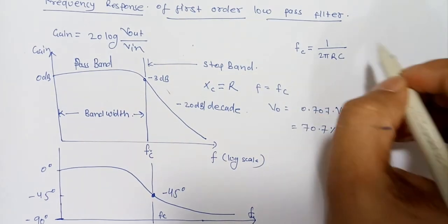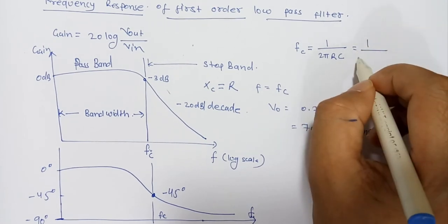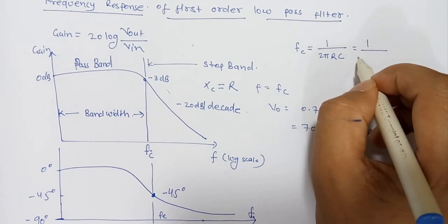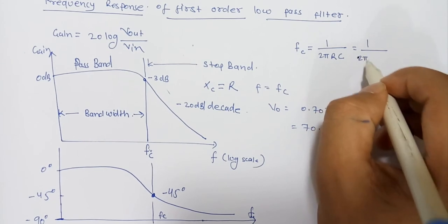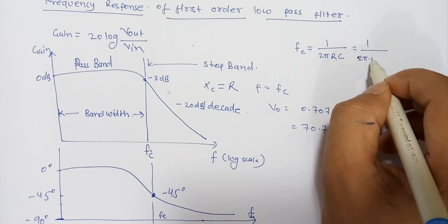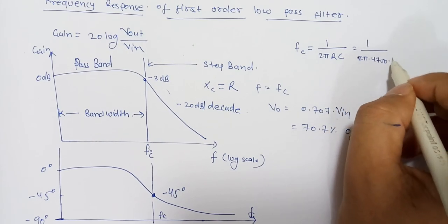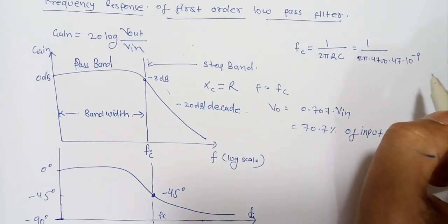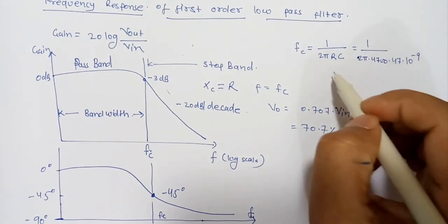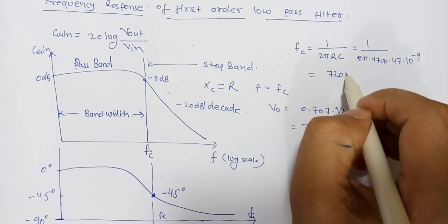Of course we have already assumed our resistor and capacitor: resistor 4.7 kilo-ohm and capacitor 47 nanofarad. So it will become 1/(2π × 4700 × 47 × 10⁻⁹), so the Fc will become approximately 720 hertz, the -3 dB cutoff frequency.